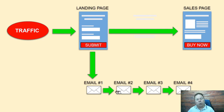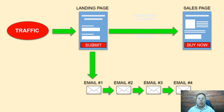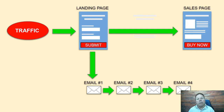This all goes out automatically 24/7 — it's set up on automation by the autoresponder. A lot of people are running traffic directly to the sales page, but then you don't capture their information. You might get some sales on the front end, but most of your sales are going to come through your email marketing.